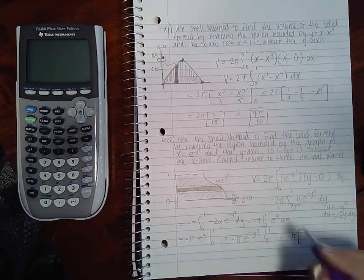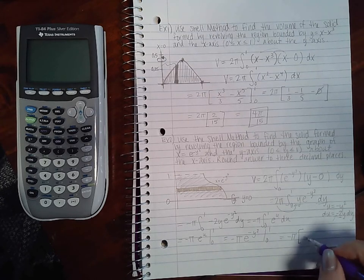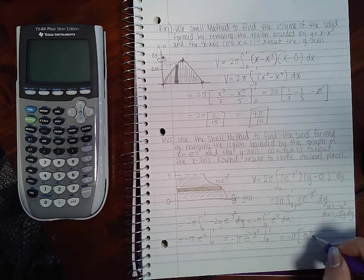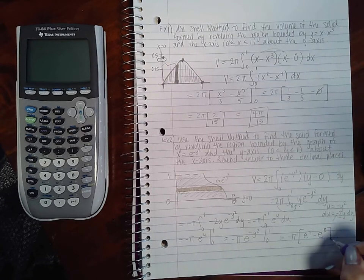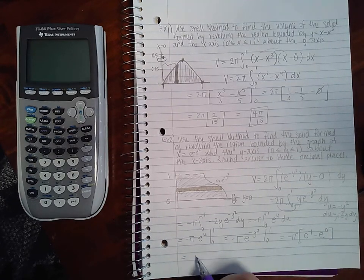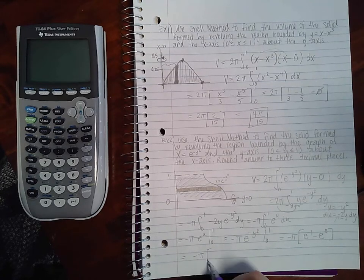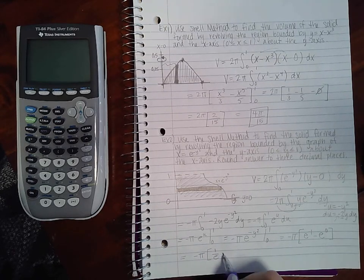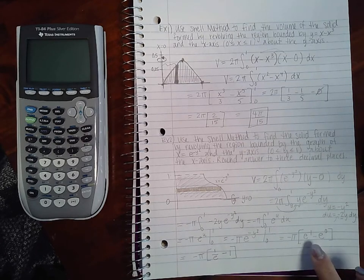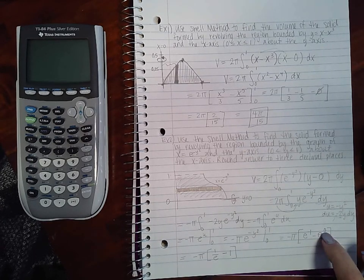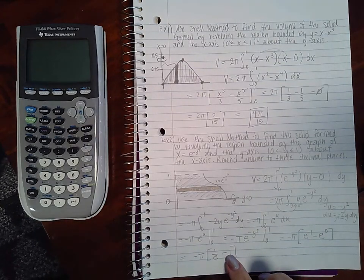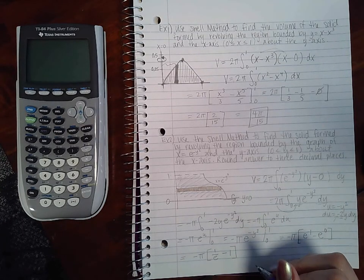Then I can evaluate at y value 0 to 1. So we get e to the negative 1 squared, which is e to the negative 1, minus e to the negative 0, or just e to the 0. So we get negative π times 1 over e minus 1. Remember that a negative exponent means 1 over e, and anything raised to the power 0 is 1.